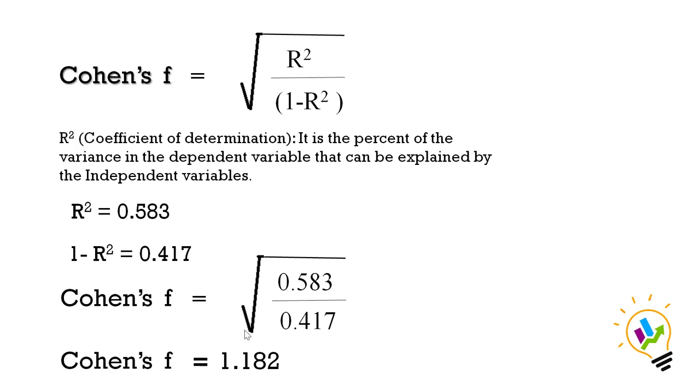So, Cohen's f value, if we calculate, square root of 0.583 by 0.417 is 1.182.